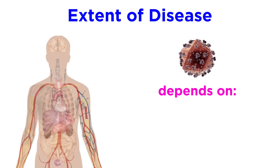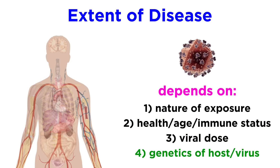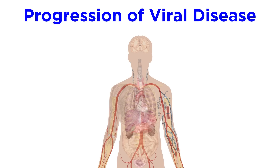The extent of disease caused by a virus depends on a few factors, including: one, the nature of exposure to the virus; two, the general health, age, and immune status of the person; three, the viral dose; and four, the genetics of the host and the virus. Viral disease in the human body progresses through a series of defined steps, similarly to how a virus enters and replicates in a cell.